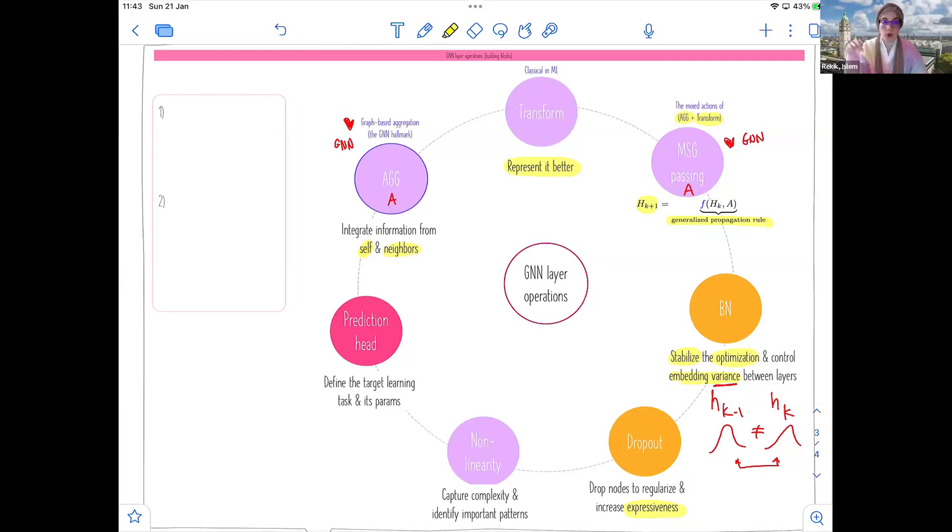We have seen also all the purple ones, and also the pink we've seen today. BN and dropouts, these are things that you can add up to your GNN layer. You can add a batch normalization, you can add dropout, usually it comes after the batch normalization, and before applying the nonlinearity.